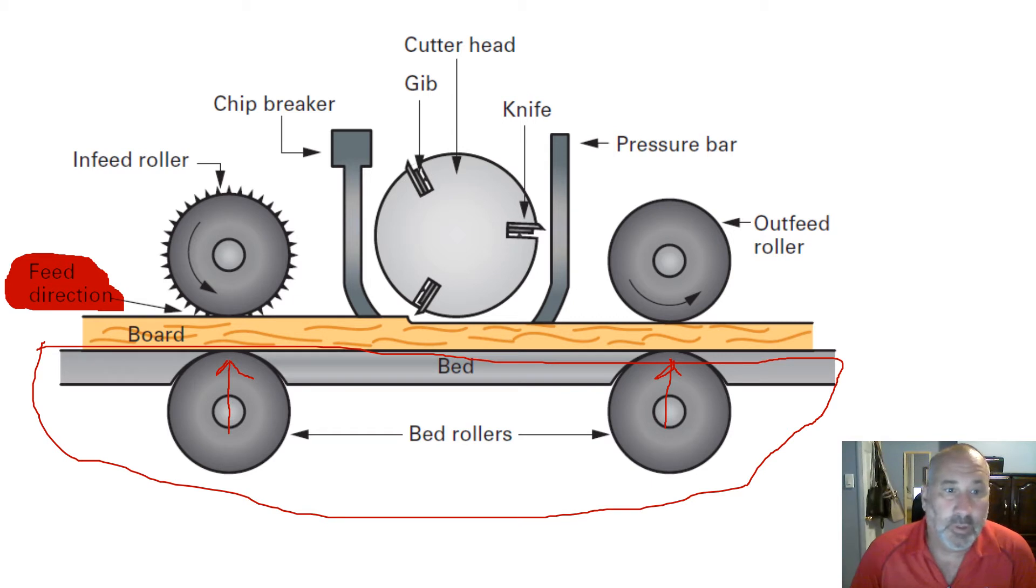And our infeed roller typically is machined to grab a hold of the wood so the wood doesn't slip and push it into the thickness planer and maintain that speed going through. Next thing that you get to is the chip breaker here.